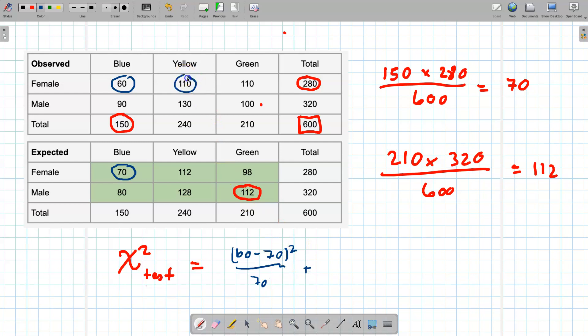I'm going to carry on for each one. So I do that one and that one: 110 take away 112, the difference is 2, I square it so I get 4 and I divide it by 112. If I keep doing that for all of the cells, so this one take away this one gives me 12, square it 144, divide it by 98, that will give me my chi-squared statistic.